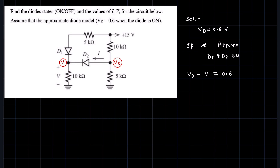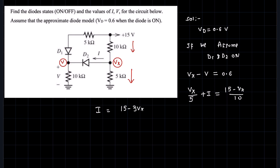Now let's write KCL — Kirchhoff's current equation — at node Vx. The current Vx over 5 kilo-ohm is going out in this direction, and one more current going outward is i. One more current flowing inward is 15 minus Vx over 10. By rearranging the terms, we get i equals 15 minus 3 times Vx over 10. This is one fundamental equation.